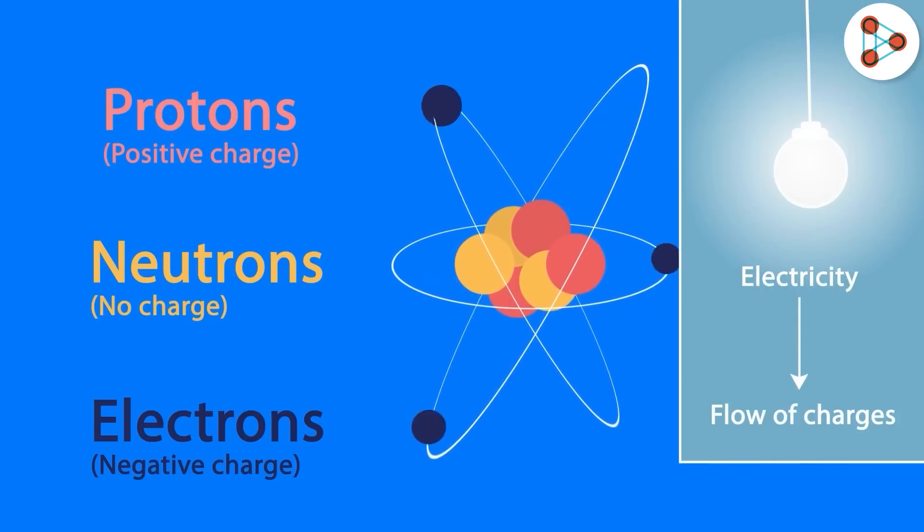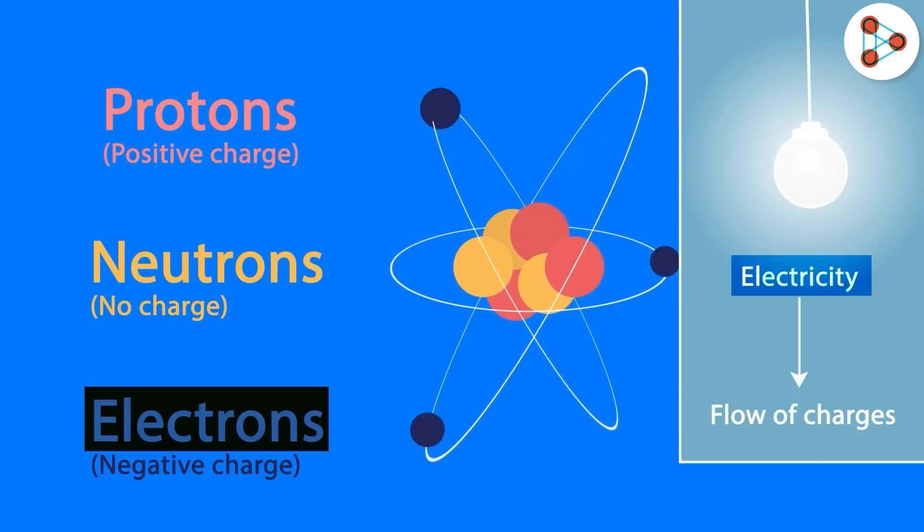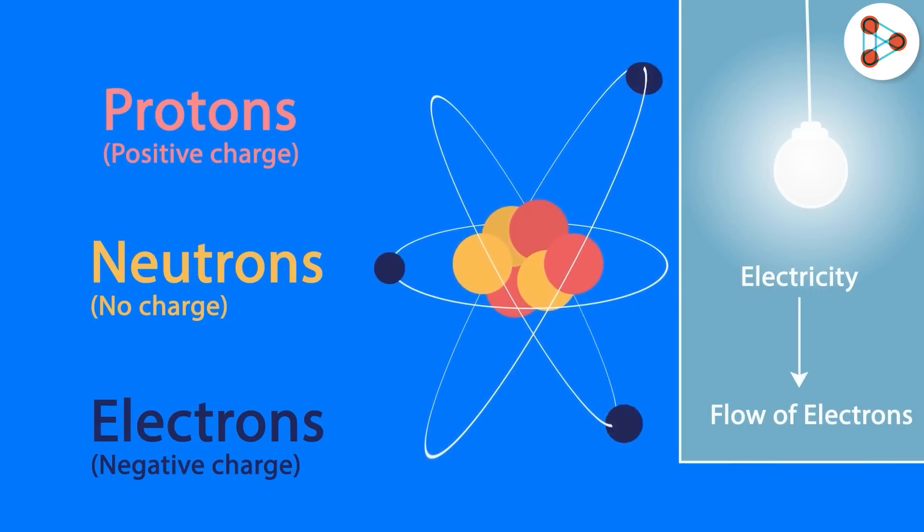Electricity is nothing but flowing charges. Which charges do you think I am talking about? The protons or electrons. Look at the words electricity and electron. Do you notice a common thing between them? Yes, it's the flow of electrons that's important to understanding electricity.